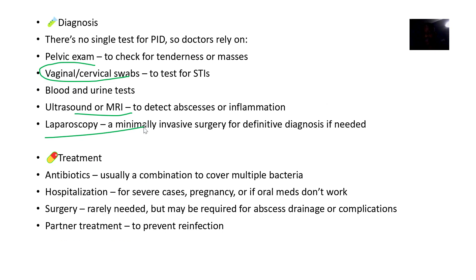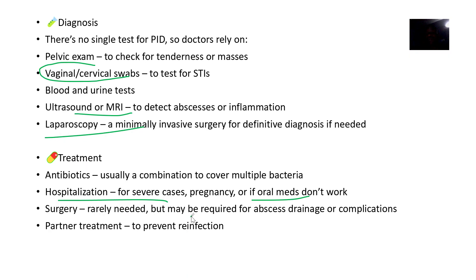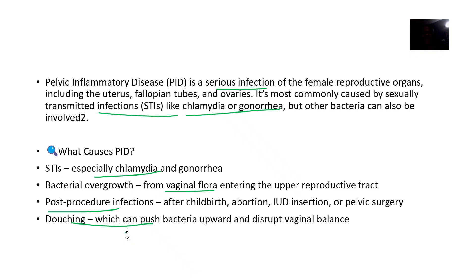Treatment: if you are dealing with infections, antibiotics can be used to cover the bacteria. Hospitalization may be needed if the case is severe, if there is pregnancy, or if oral medications don't work. There are also surgical options to drain any abscess formation from the uterus, fallopian tubes, or ovaries. Partner treatment is also important — as they are treating you, they should also be treating your partner, because you can keep getting reinfected if your partner is not treated as well.